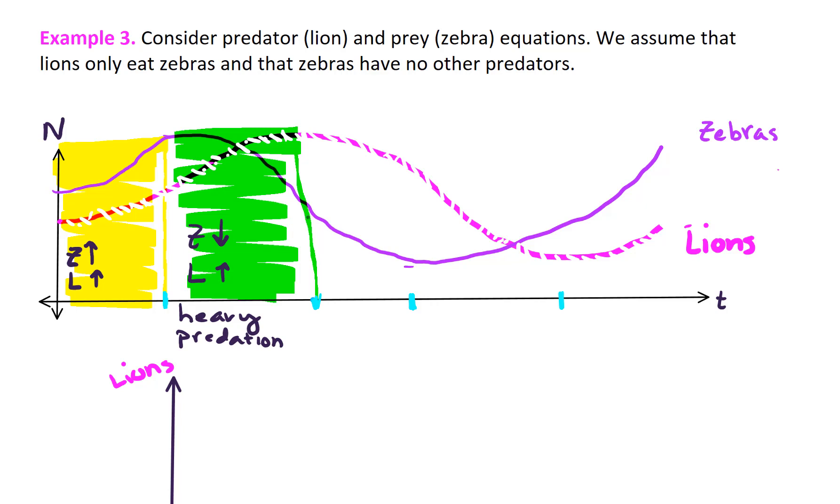The zebra population then gets so small that it starts to cause the lion population to go down. Okay, next, let's take a look at this region right here. In this next region, what's going on? Well, here, the lions were at a peak, but their food source is running out. And so now the lion population starts to decrease. The zebra population is still decreasing. And so here, we'll see zebras are going down. The lions are going down. And the lions are starving. Pretty soon, the zebra population gets to pick back up. Alright, so in this region right here, the lions are still decreasing. The zebras are increasing. There is light predation in this region.